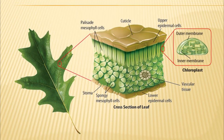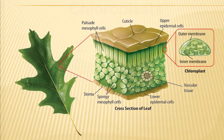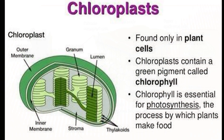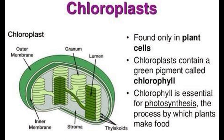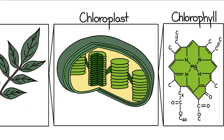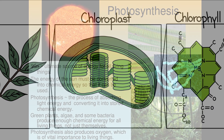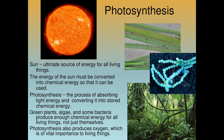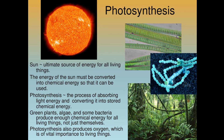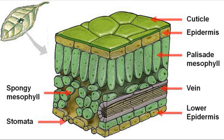Photosynthesis occurs in the mesophyll cells of the leaf. These cells contain numerous plastids called chloroplasts. These chloroplasts contain the green pigment called chlorophyll. This pigment is one of the most important as it absorbs the sunlight which provides energy for the process of photosynthesis. The entire process of photosynthesis occurs inside the chloroplast of the leaf.